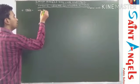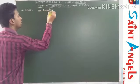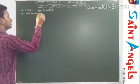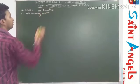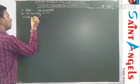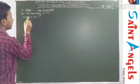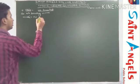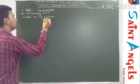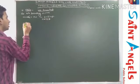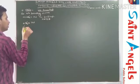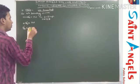We know that for nth secondary minima, a·sinθₙ' = nλ, where θₙ' indicates the angular position of nth secondary minima. For small angle, sinθ ≈ θ, so a·θₙ' = nλ. It means the angular position of nth secondary minima is equal to nλ/a.